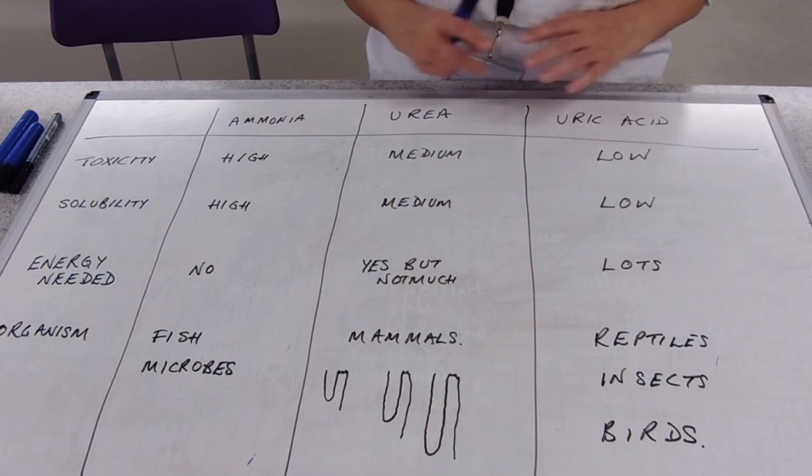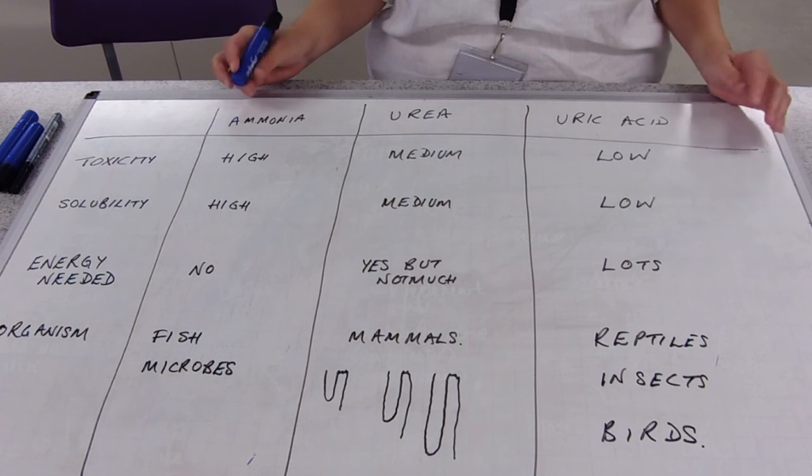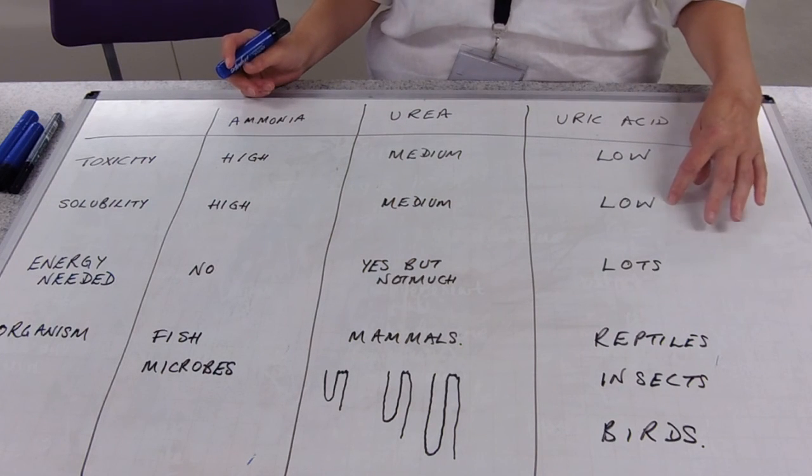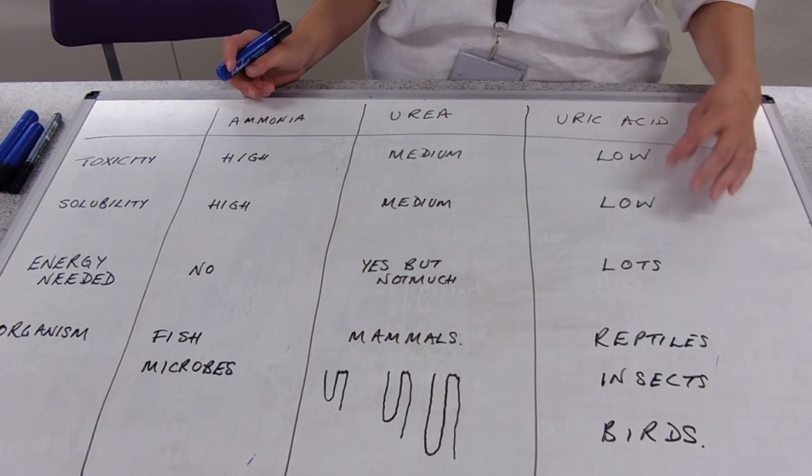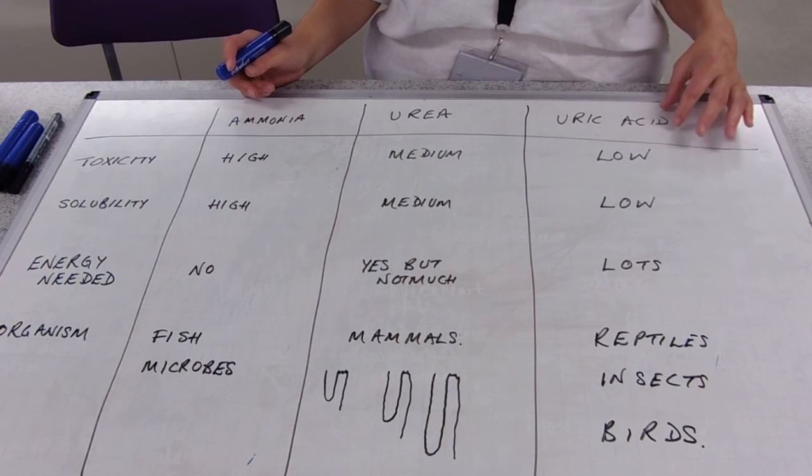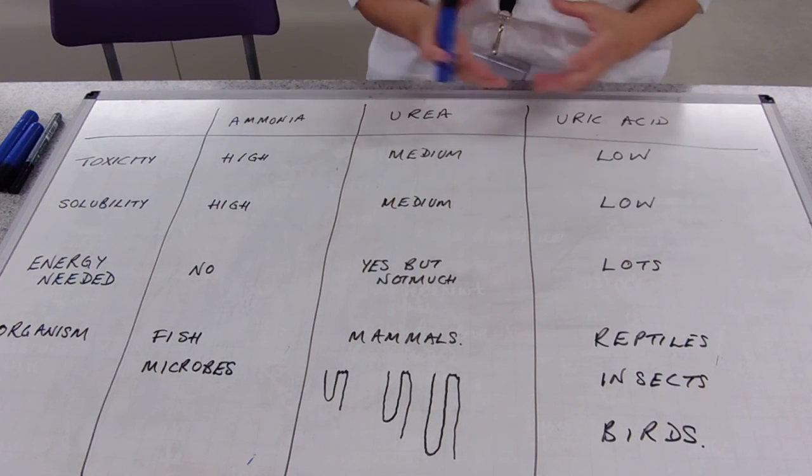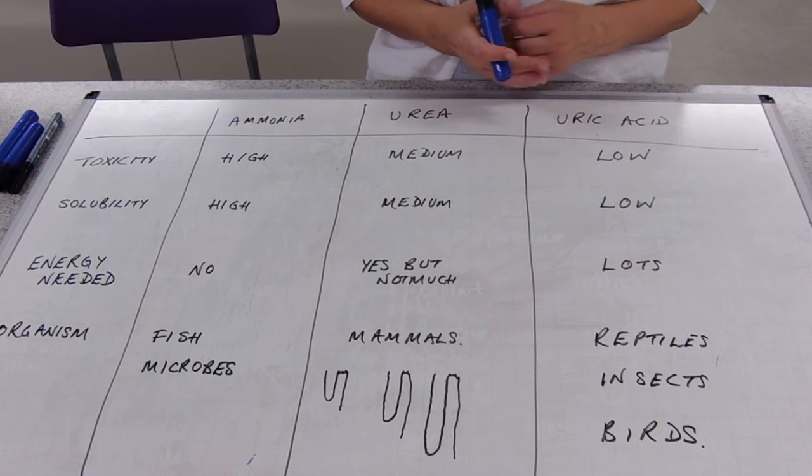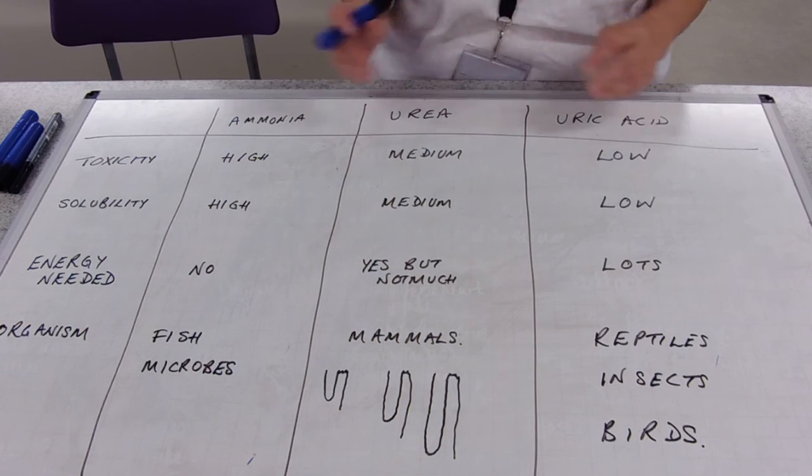So, if you're in an egg, you can still make it, and you can leave it behind when you exit the egg. Low solubility. Now, this means that you don't urinate as an organism. You produce a paste of uric acid. But, fantastic because you don't need to carry around any water in order to get rid of it, or you don't need to lose water to get rid of it.